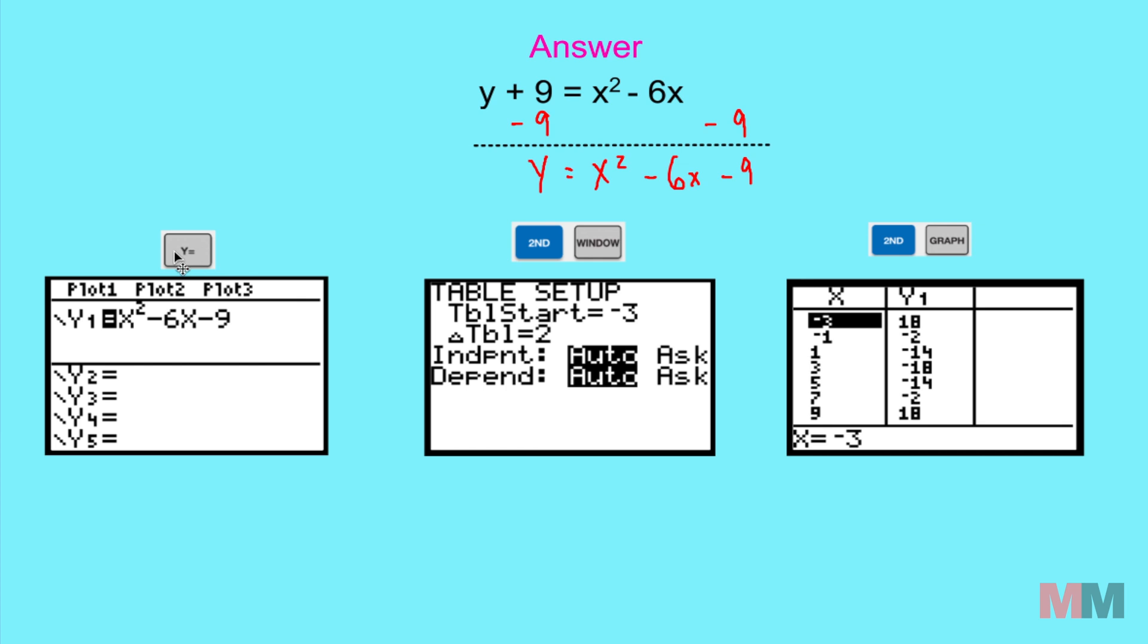First you press y equals on your calculator to type in the actual equation. If you press second window it'll give you your options so I said I want this table to start at negative 3 and I want it to count by 2's. And the last part if you want to access the actual table itself you just press second graph and you got your table values right here.